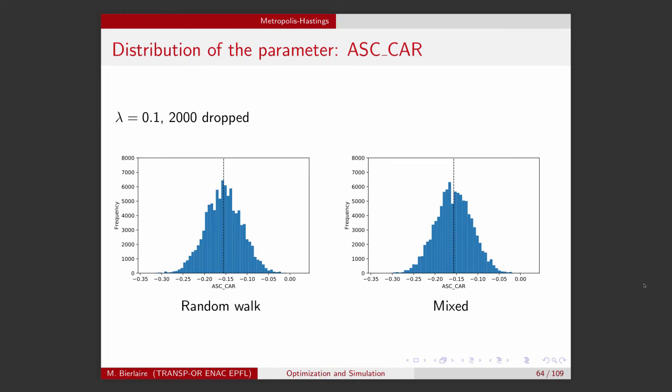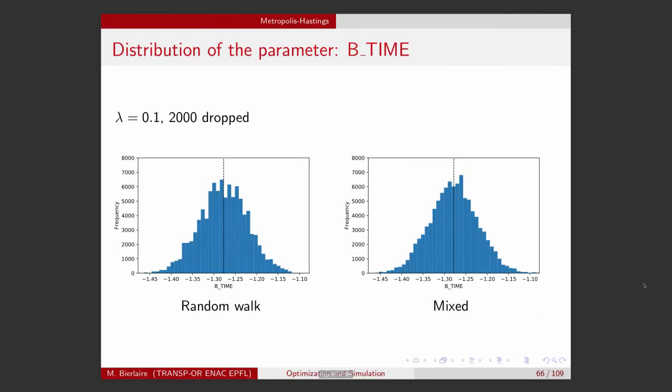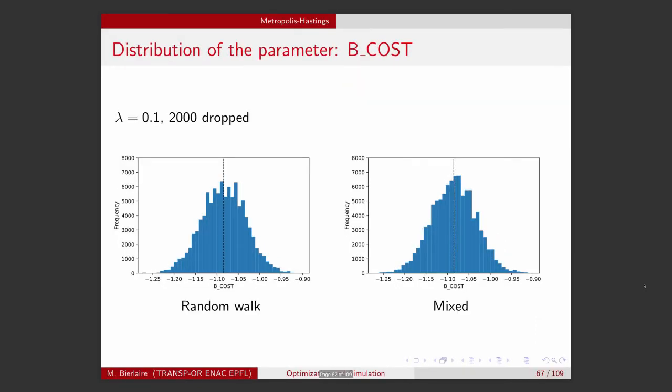And again, I compare the draws. So here between the random walk and the mixed from each parameter, and you can see that they are again quite similar in nature. And beta_cost.